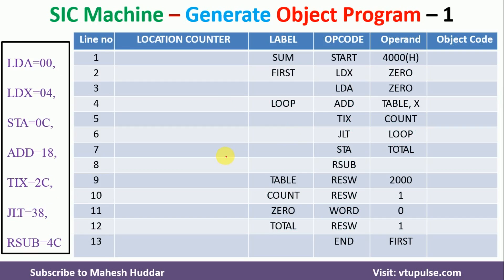I will create a table with different columns. I have added two more columns: the first column is the location counter and the last column is the object code. We have been given the label, opcode, and operand already. The very first thing we need to do is search for the START directive. Once we find it, this label is the name of the program and the value is the starting address. We will put this starting address into LOCCTR and assign it to the first instruction. So this is the first executable instruction, and we will put 4000 here.